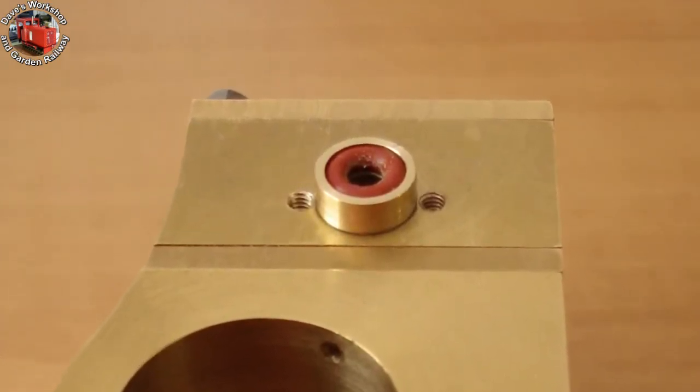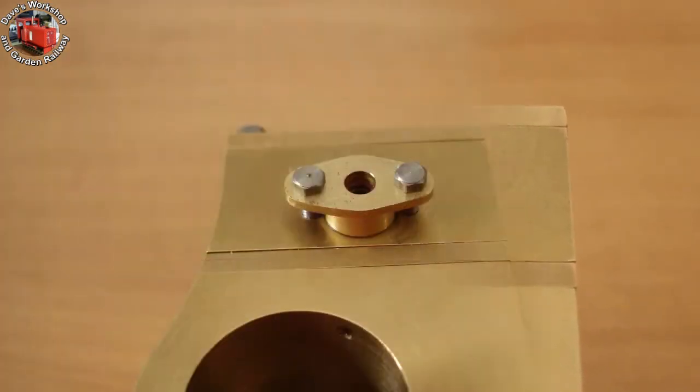8 BA holes tapped for the oval cover plate. The first cover plate screwed in place. It took filing and fettling to get the look right.